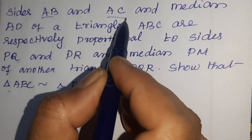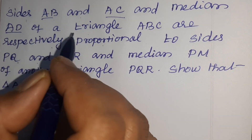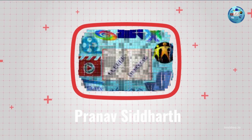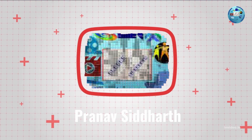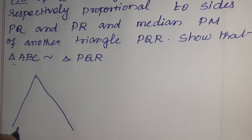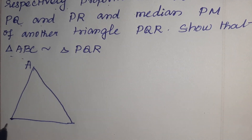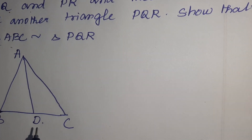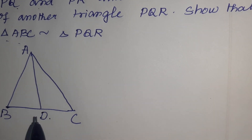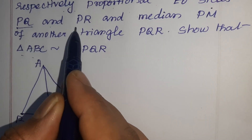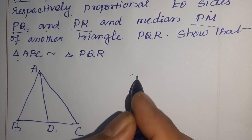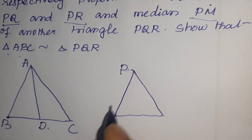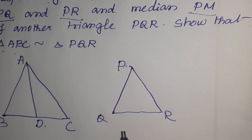Here, what is given is sides AB, AC and median AD of a triangle. First, you have to draw one triangle that is ABC with median AD. AB, AC are proportional to sides PQ, PR and median PM. So next you draw another triangle PQR with median PM.